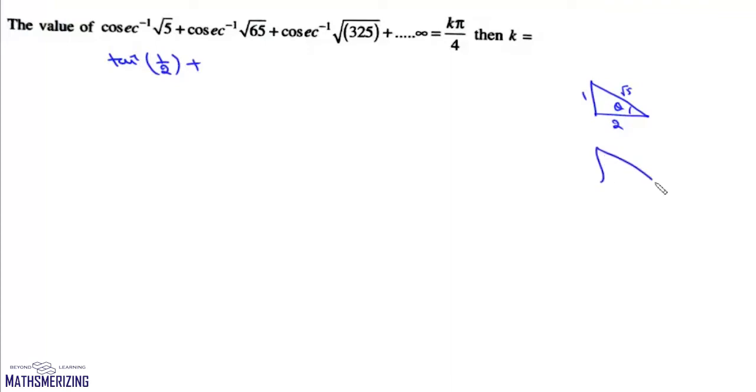Now for the second one, we'll have root 65, this is 1 and it'll be root 64, which is 8. So it'll be tan inverse 1 by 8.